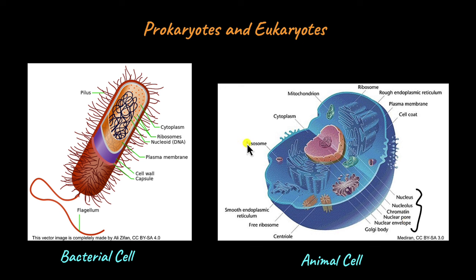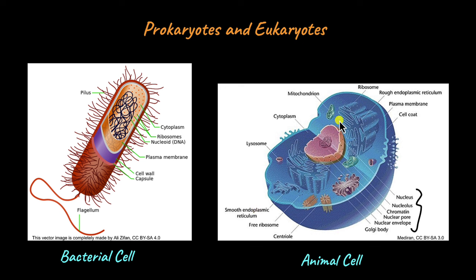There are other differences between prokaryotes and eukaryotes as well. One main difference is the fact that eukaryotes have several membrane-bound organelles. Organelles are subcellular structures that each perform a specific function needed for the cell to function properly. Mitochondrion, rough endoplasmic reticulum, lysosomes, smooth endoplasmic reticulum, and Golgi bodies are examples of organelles found in eukaryotes. These organelles are not found in prokaryotic cells at all.